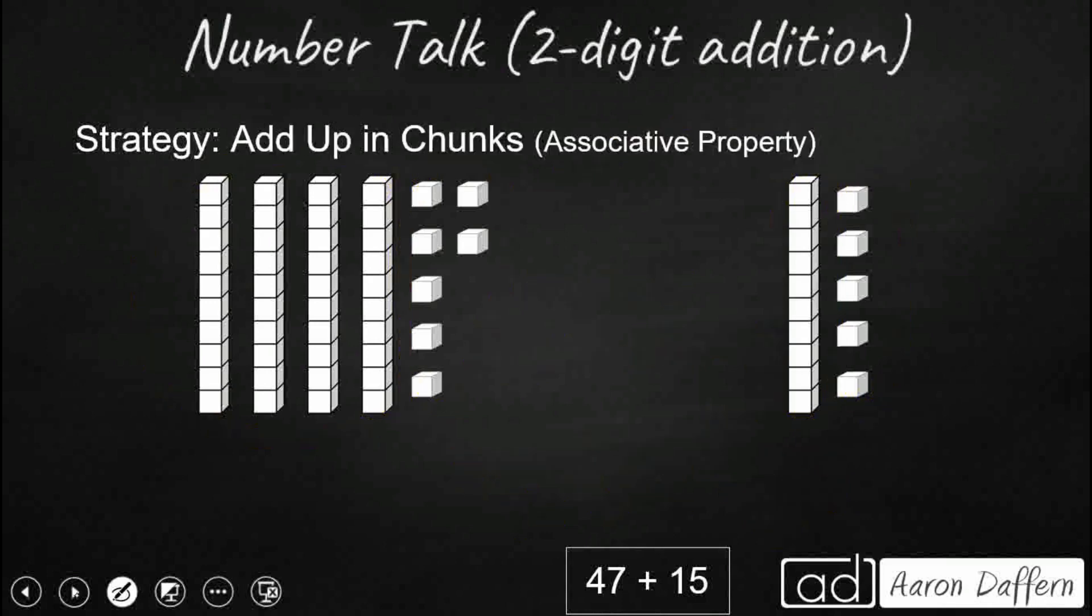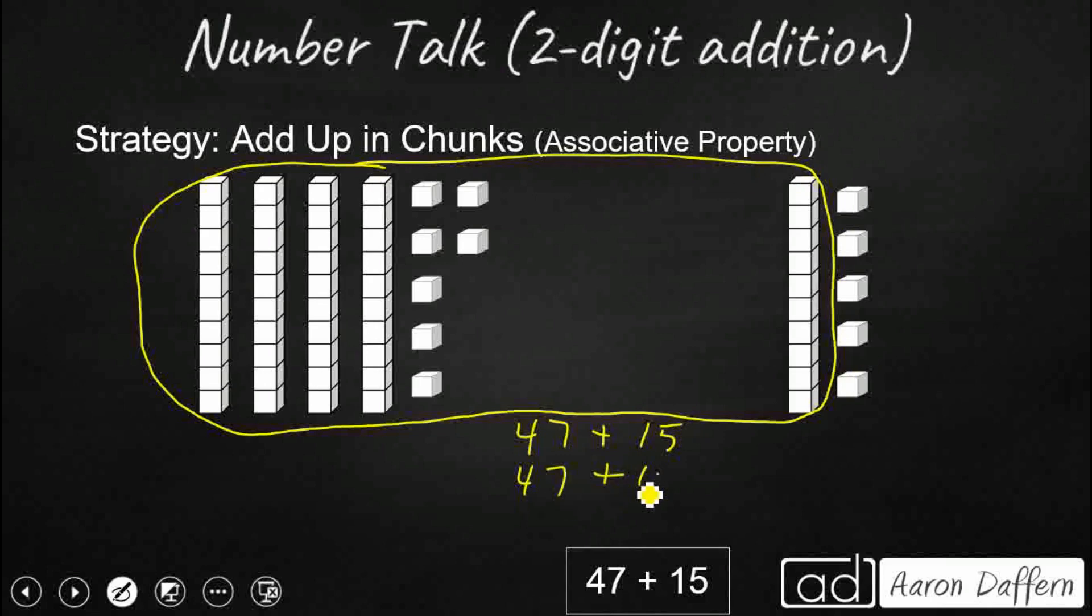We can also add up in chunks. Now this is a pretty good way to do it, because what it does is it just takes the whole first number plus the tens place of the second number. We're just going to do it all in one big chunk. So 47 plus 15. Really what we're going to do is we're going to take that 15, and we're going to break that up into a 10 plus 5. Then I'm going to use my associative property to just add up the 10 with that 47, and then add the 5 later.